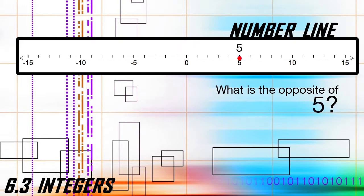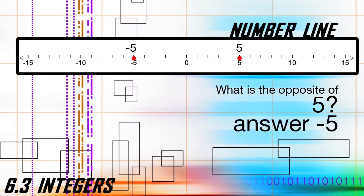What is the opposite of five? Step one, plot five on the number line. Step two, count the units back to zero. Step three, go to zero. Step four, count the units in the opposite direction — in this case it would be negative five. As soon as you identify the pattern on how to find the opposite of an integer, you'll be able to do this quickly in your head.